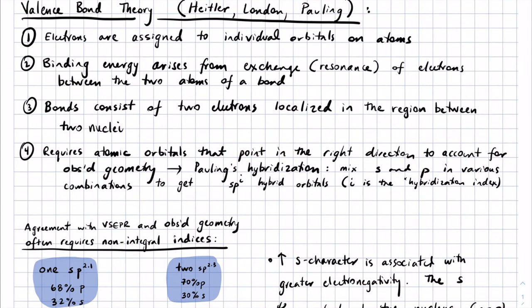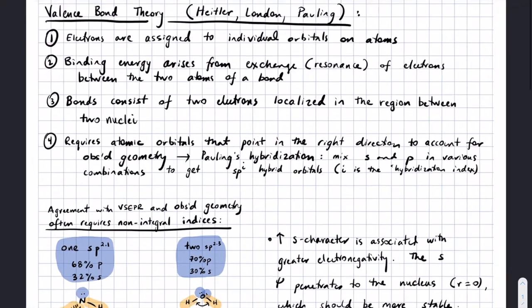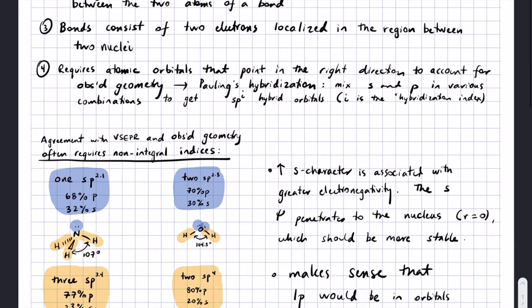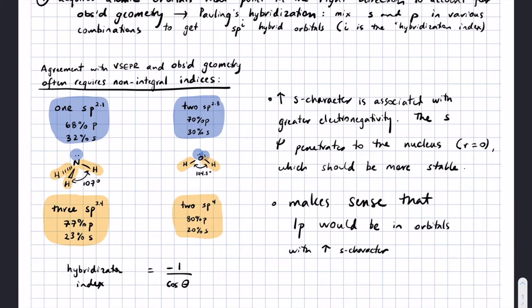I mentioned last time I wanted you to go through and make sure you understood the first section. We talked a lot about valence bond theory, which is where we think about bonds as being localized between two electrons, localized between two atoms. We talked about the necessity of hybrid orbitals to get the directionality right so that individual atomic orbitals can overlap to form bonds.